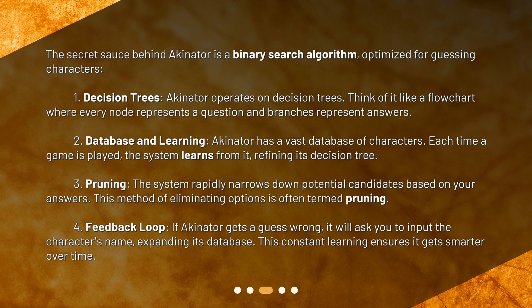3. Pruning: The system rapidly narrows down potential candidates based on your answers. This method of eliminating options is often termed pruning. 4. Feedback Loop: If Akinator gets a guess wrong, it will ask you to input the character's name, expanding its database. This constant learning ensures it gets smarter over time.